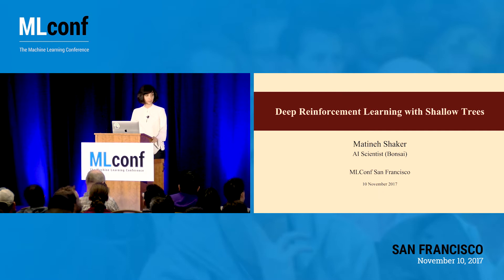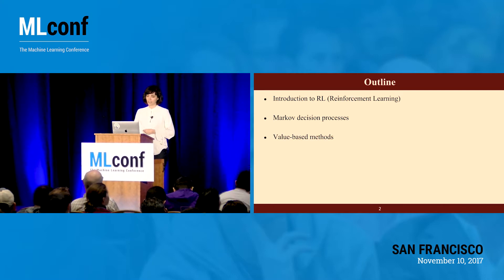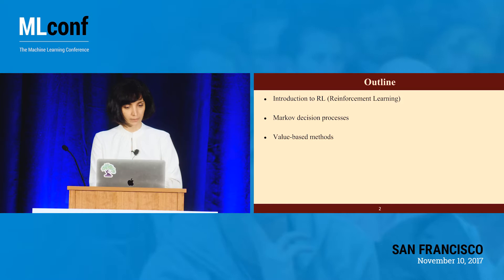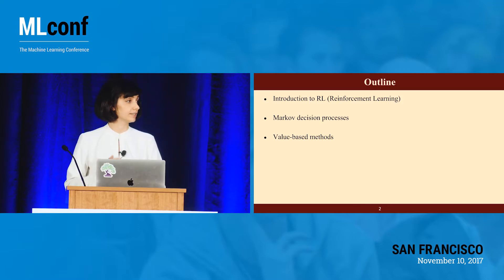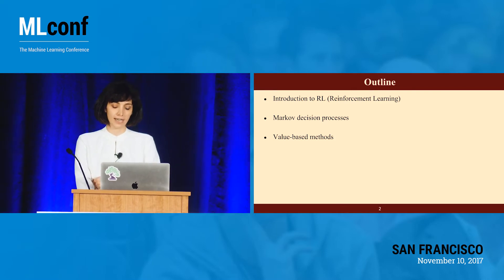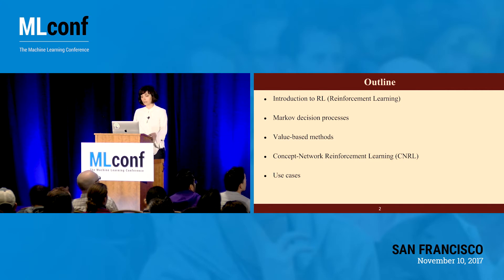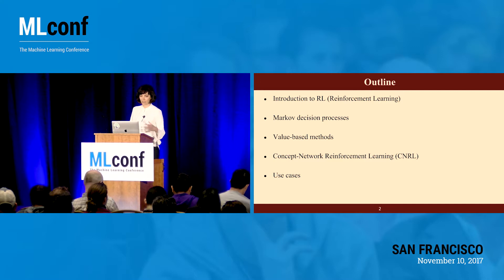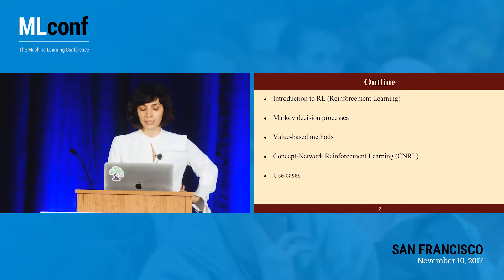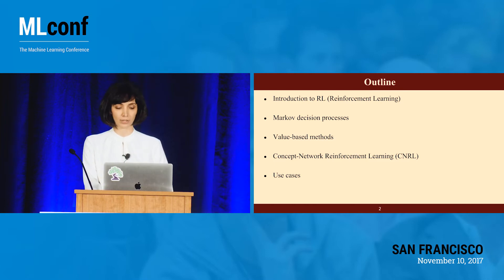I'm going to talk about deep reinforcement learning with shallow trees. At the beginning I'll cover reinforcement learning, because there is less familiarity with it compared to other machine learning techniques, and the mathematical framework behind it — Markov decision processes, value-based methods — in the context of the work we do at Banzai, and how we are solving our reinforcement learning problems through concept networks and some use cases.